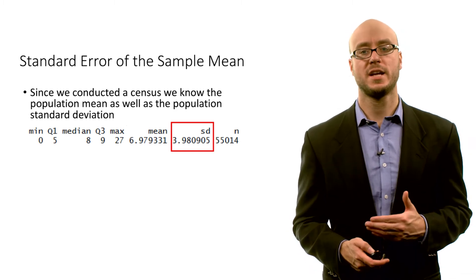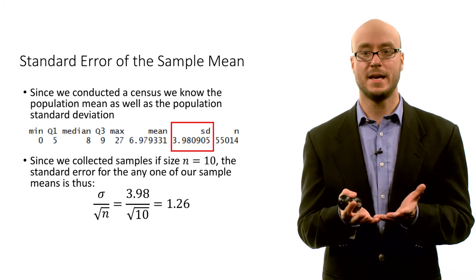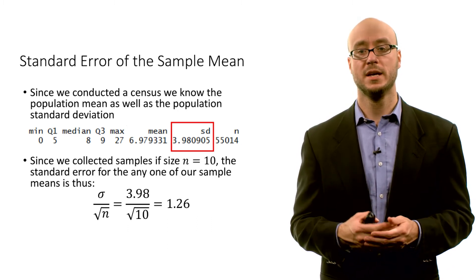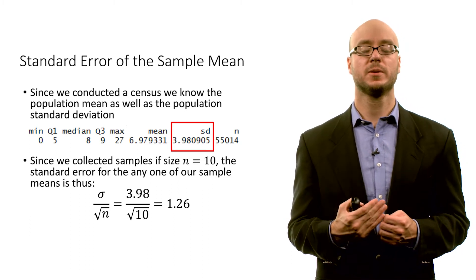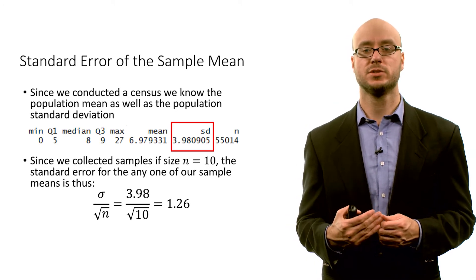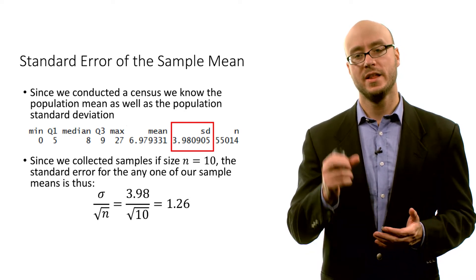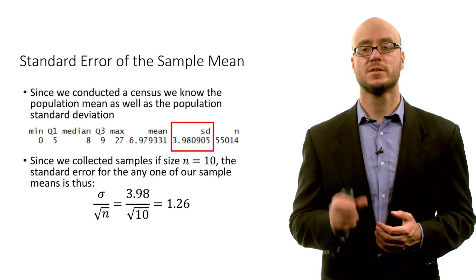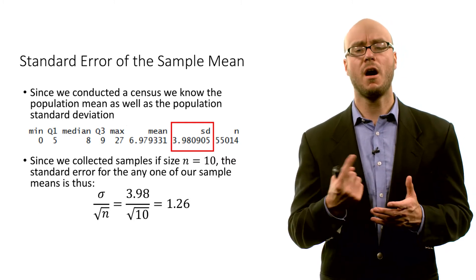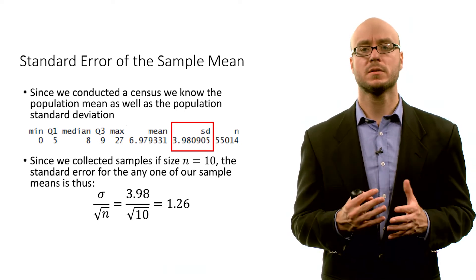In practice we wouldn't observe these values, but it's useful for understanding the properties of the sampling distribution. Since we're collecting a sample mean based on a size of 10 people, the standard error for any one of our sample means is going to be that population standard deviation divided by the square root of our sample size. So we take 3.98 — that's the population standard deviation for educational attainment — and divide by the square root of 10, and we get a value of 1.26. That is the standard deviation of our sampling distribution, equivalently the standard error of the sample mean.